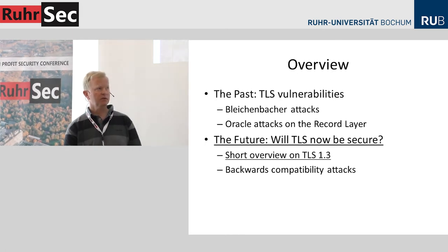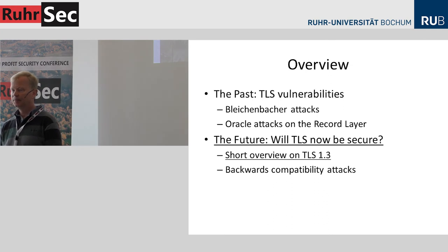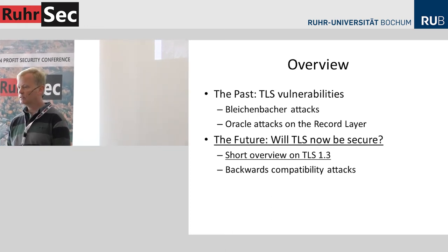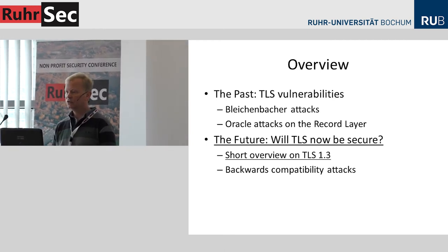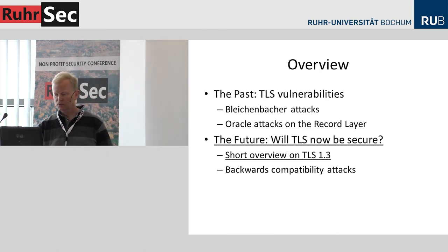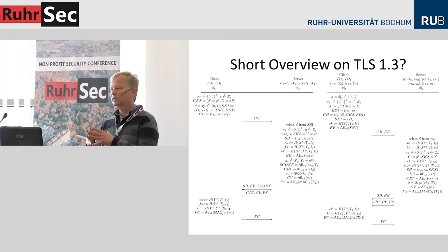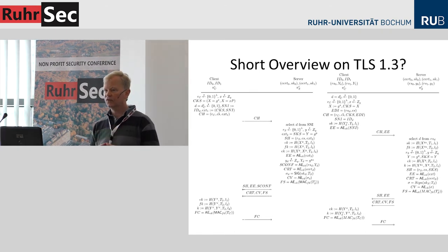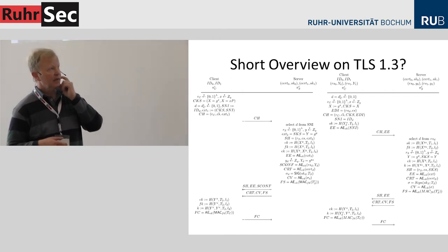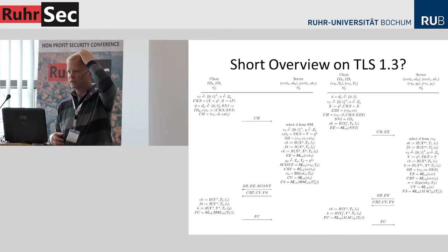What about the future? I want to give a bit more detail on what is new in TLS 1.3, and then show a backwards compatibility attack we presented at CCS last year that uses older versions of TLS to break TLS 1.3. The standard is very complex; we tried to extract the cryptographic essence and put it in two descriptions: the standard handshake on the left and the zero round-trip time handshake on the right. There is a lot of crypto in the new standard.